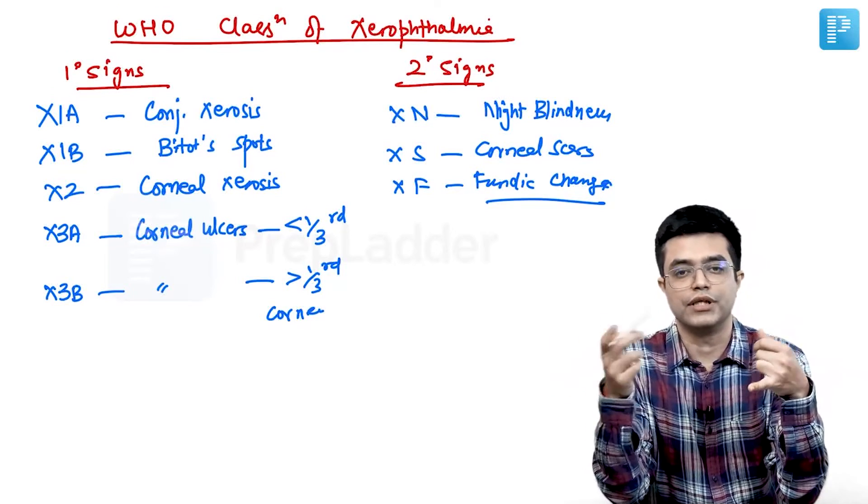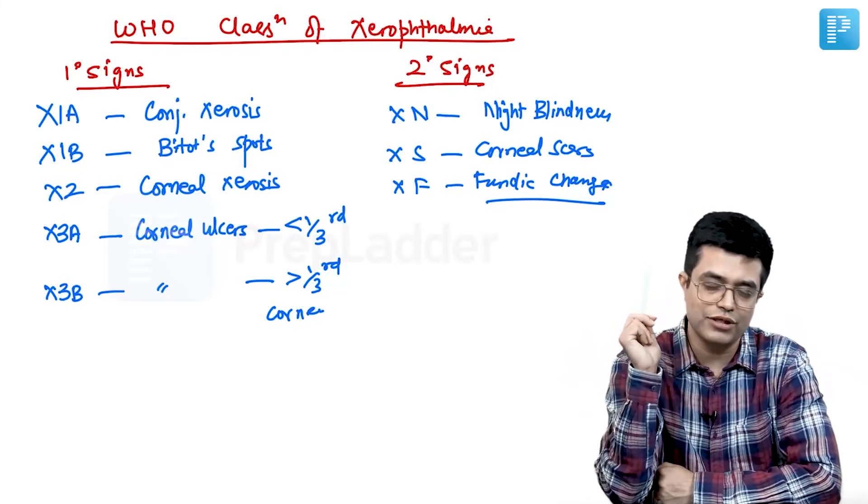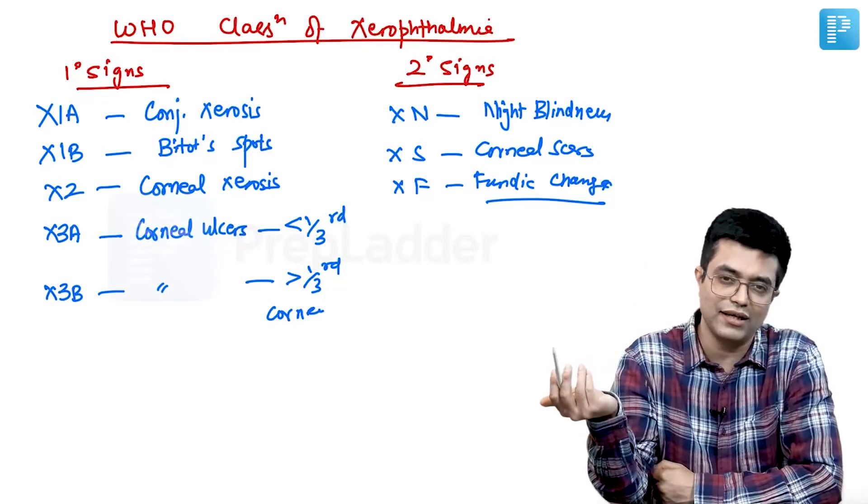Because patient will not say conjunctival xerosis is there. So, answer will be night blindness is the first symptom. If they say, what is the first sign? Sign is obviously a clinical sign. And then,